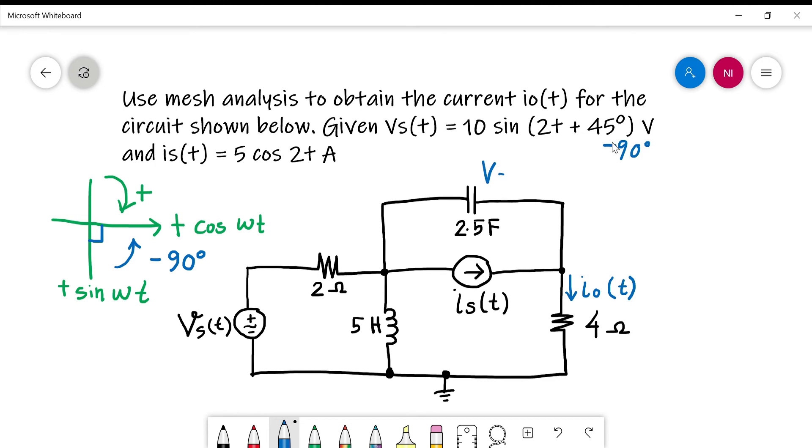VST now equals 10 cos(2t - 45°) V. For IST, you don't need to change anything because it is already in cosine and it is positive cosine. Now let's convert to frequency domain or phasor domain.